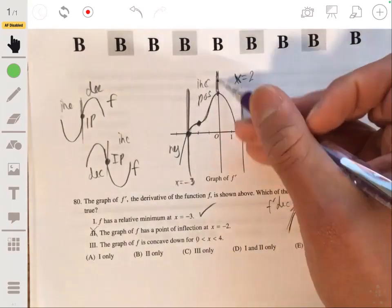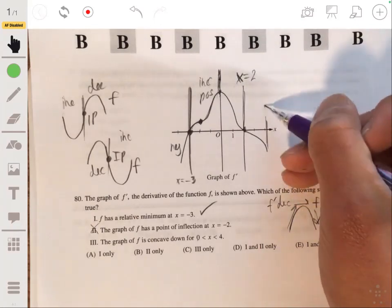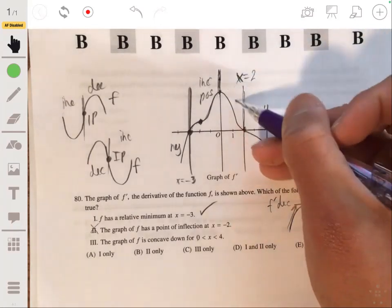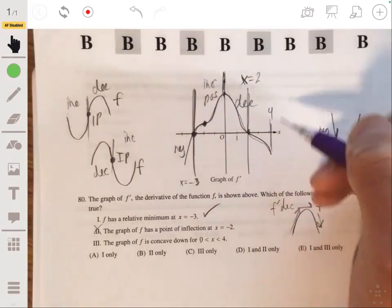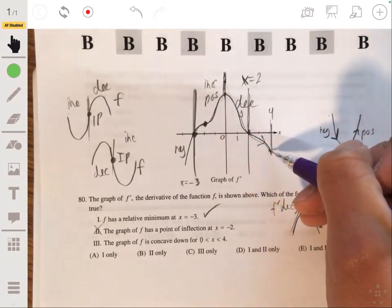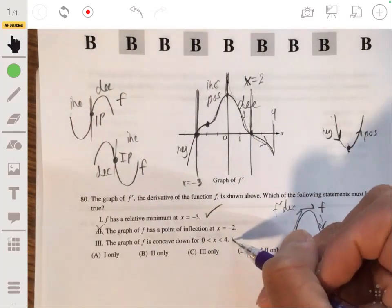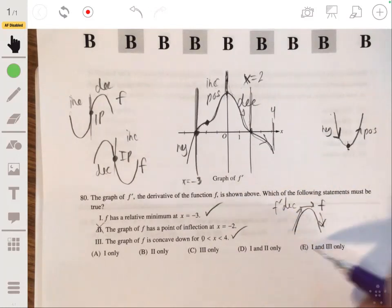They're going from 0 to 4, which is over here. And you can see it is decreasing all along, all along this interval, it is decreasing. It goes from being positive to being 0 to being negative. So this is correct. So one and three are correct. So our answer would be E.